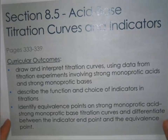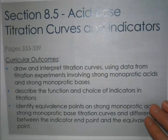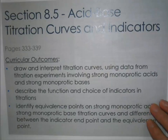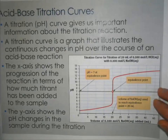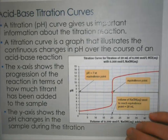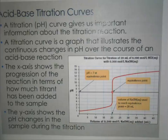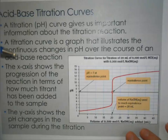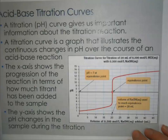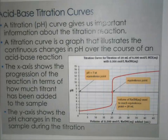Hello GEM20 students, today we're looking at our last section: titration curves and the indicators we would use for our titrations. A titration curve is sometimes also called a pH curve, and it basically gives us some important basic information about the titration reaction. It's just a graph that illustrates how the pH is changing over the course of the acid-base reaction.